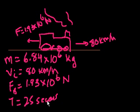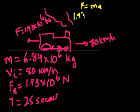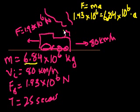The first question asks: what is the new speed of the train after the brakes are applied for 25 seconds? All we have to figure out is the rate of deceleration this backward force creates. We go back to basics: Force equals mass times acceleration — probably the easiest formula ever to memorize. The backward force is 1.93 times 10 to the sixth, and that equals mass times acceleration. The mass is 6.84 times 10 to the sixth, and acceleration is what we're trying to find. Since the force is pulling back, the acceleration is also going to be backwards — it will slow down the train.